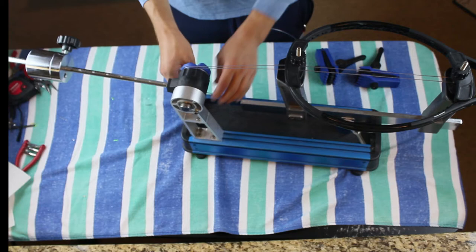Now we're going to pull tension on each string. This is just to set our first clamp. Since this is a drop weight stringer we need to make sure the tensioning bar is parallel to the ground.